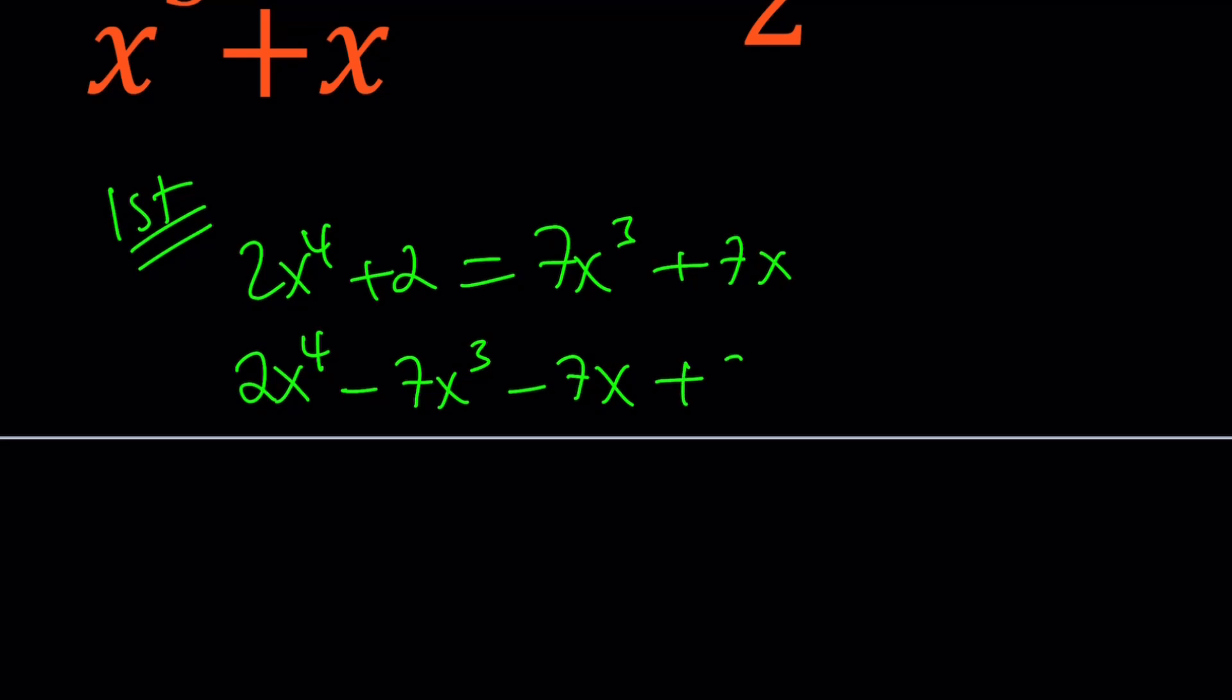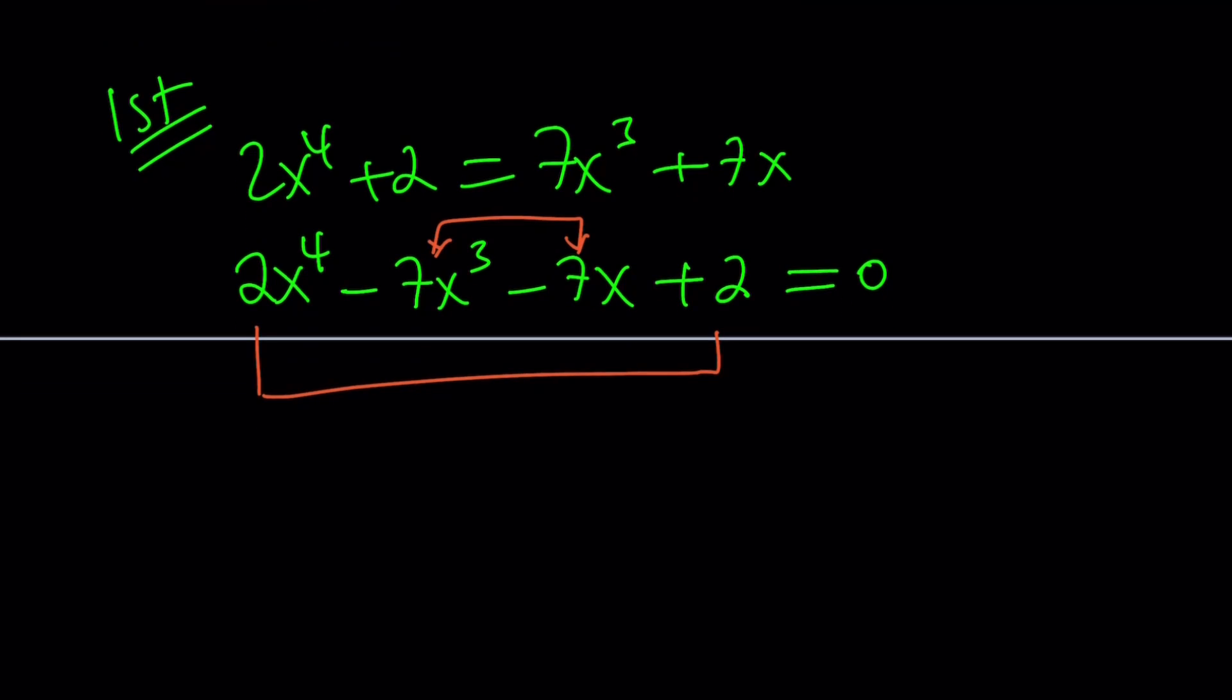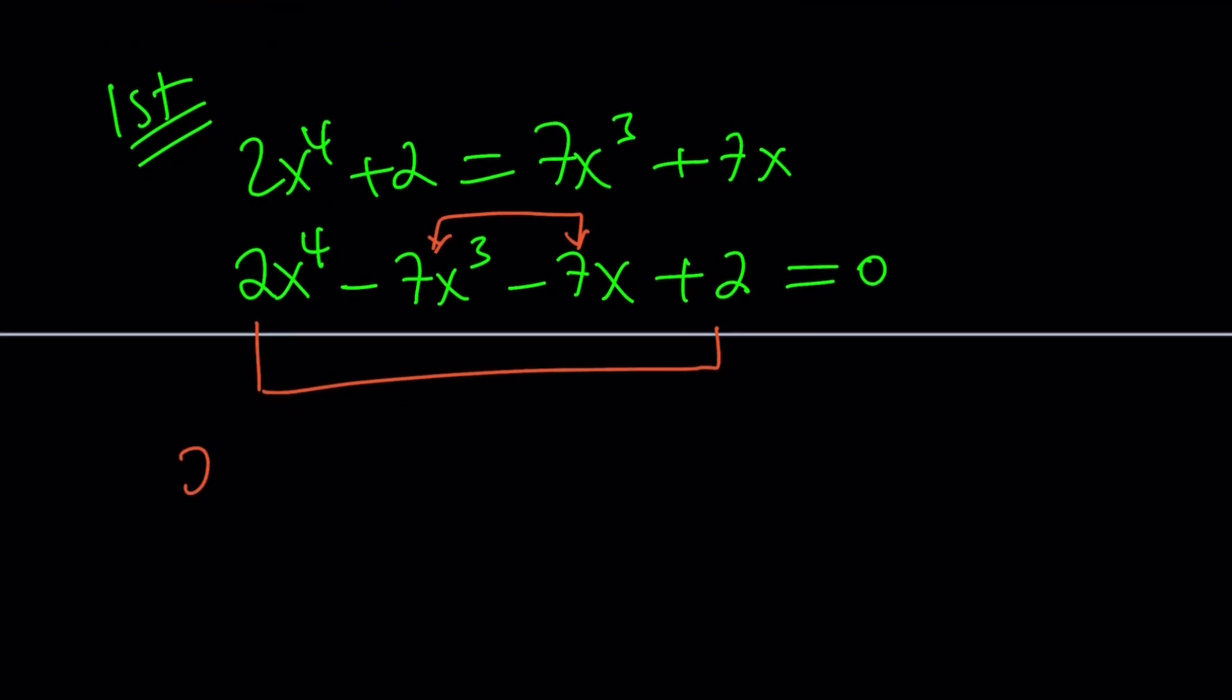The numbers, the coefficients, kind of remind me of some type of symmetry. There seems to be some type of symmetry. And I'm hoping that this is going to be factorable because of the numbers. So I try to pair up these two and those two because of the numbers again. Let's see how we can factor these two. Factor the 2 out, x to the 4th plus 1, and then minus 7x, x to the 2nd plus 1.